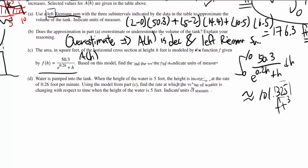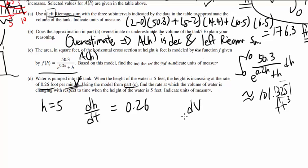Last one, Part D: Water is pumped into the tank. When the height is 5 feet, the height is increasing at the rate of 0.26 feet per minute, not per second, not per hour. And we know the height is 5, and the rate at which the height is changing with respect to time is 0.26. Using the model from Part C, find the rate at which the volume of the water is changing with respect to time. So we wish to find dV dt when the height is 5 feet.